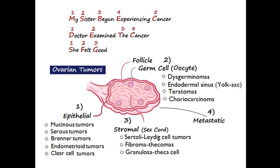The second sentence is 'Doctor examined the cancer,' which helps us remember the germ cell tumors — the second type of ovarian tumor arising from the oocyte inside the follicle. D stands for dysgerminoma, E for endodermal sinus or yolk sac tumors, T for teratomas, and C for choriocarcinoma.